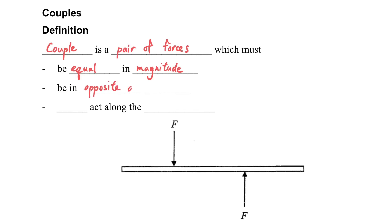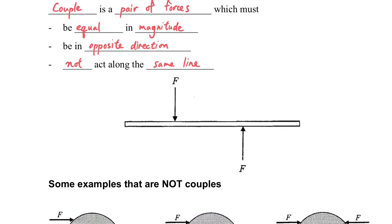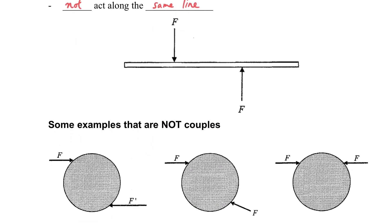You can see in this figure that the two forces acting on the rod are a couple. Could you imagine what the effect of the couple is in this case? The rod will rotate.